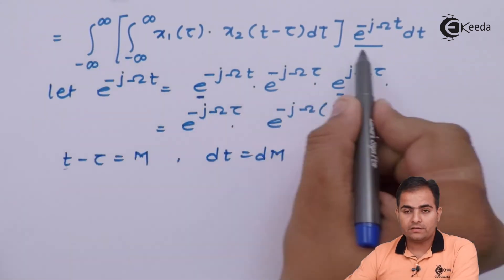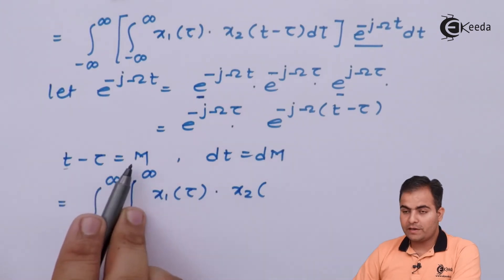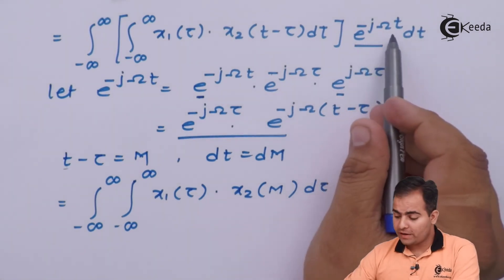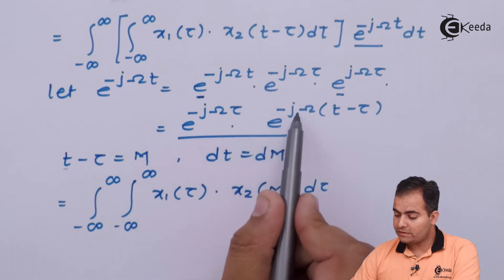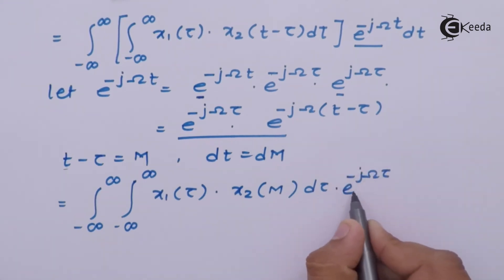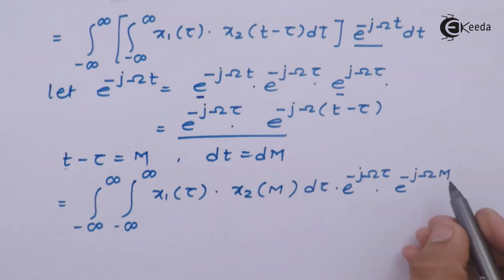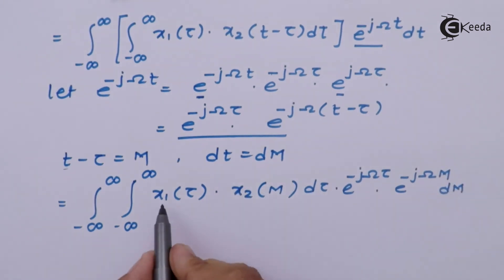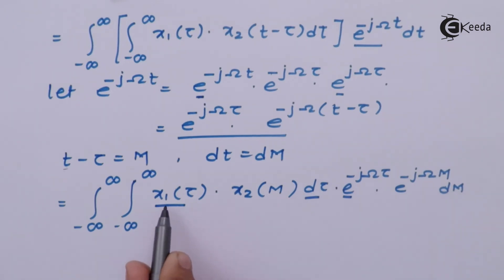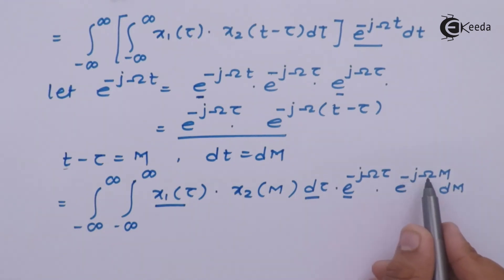I am going to substitute all these values into the formula. t minus τ is represented by m, this is our τ. Here, e to the power minus jωt is replaced by e to the power minus jωτ times e to the power minus jω(t minus τ), and since t minus τ is replaced by m, we get e to the power minus jωτ times e to the power minus jωm, and dt is replaced by dm.